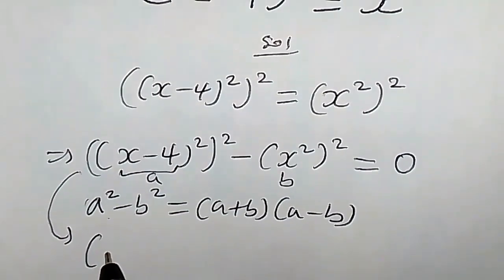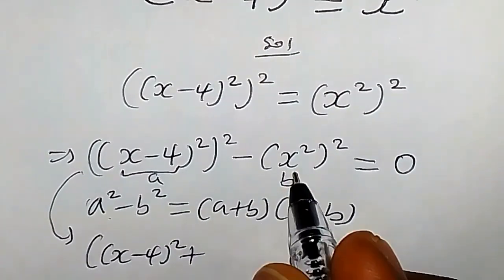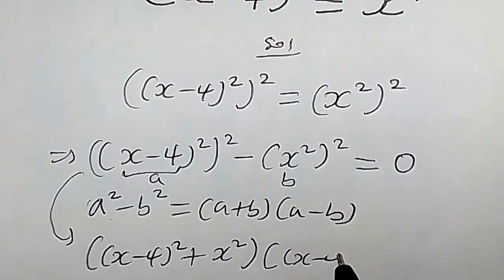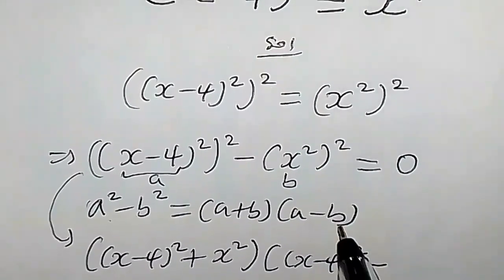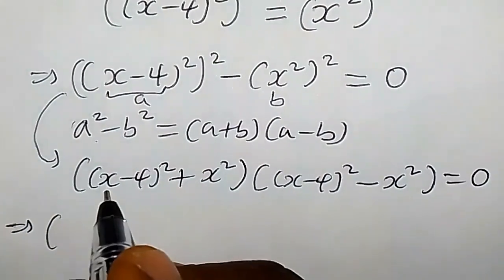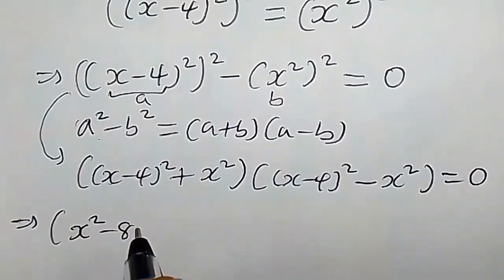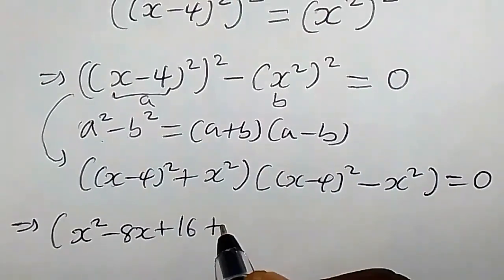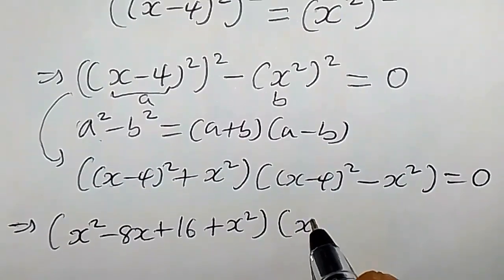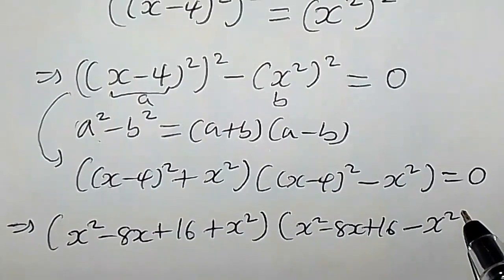Applying the difference of squares property: a is (x minus 4) squared, plus b which is x squared, times (x minus 4) squared minus x squared, equals 0. Expanding (x minus 4) squared gives x squared minus 8x plus 16, so we get (x squared minus 8x plus 16 plus x squared) times (x squared minus 8x plus 16 minus x squared) equals 0.